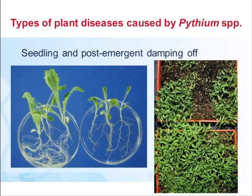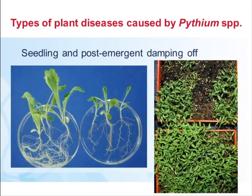Looking at seedlings — in that case on the right you can see plants keeling over and dying, and quite often in a situation like that it'll go right through the tray. The slide on the left is important: quite often you wouldn't even know that Pythium is affecting your plants. Those two petri dishes show lettuce seedlings — the ones on the right are infected with Pythium, whereas those on the left are healthy. You can see the difference in root systems, with far fewer feeder roots on the infected side. With a uniform group of plants like that, you wouldn't even know they had the infection.